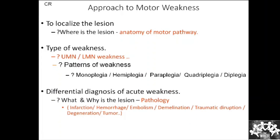Now the differential diagnosis for acute weakness: you need to identify where the lesion is, what type of weakness, what pattern, and what the possible etiology is — the etiopathogenesis. In the current case, possibilities include infarction, hemorrhage, or embolism. Other conditions producing motor weakness include demyelination, traumatic disruption, degeneration, and tumor.